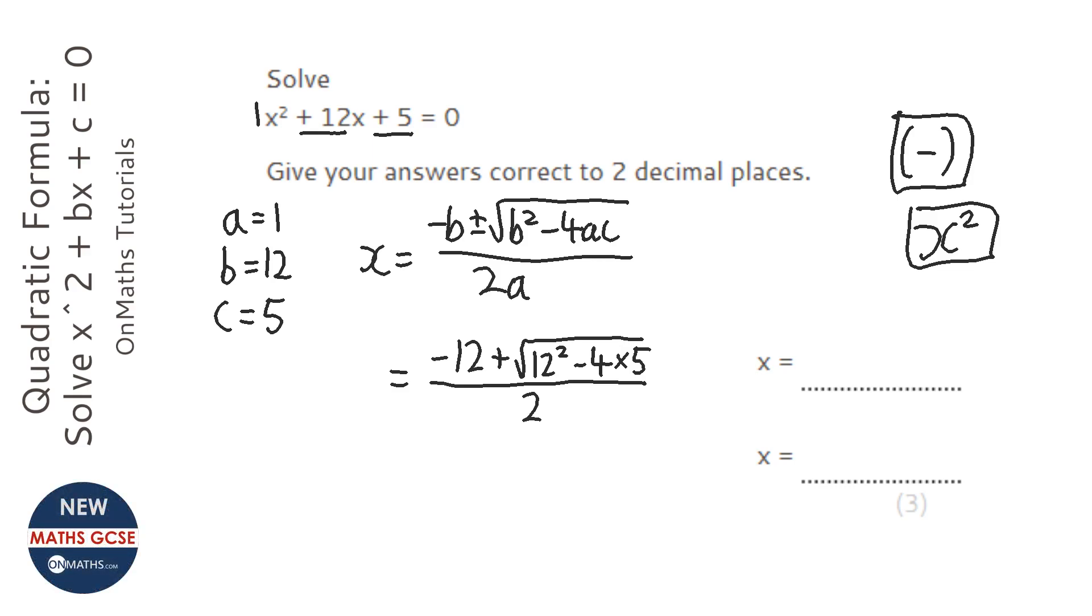Then when I press equals, it looks kind of funny, it's basically a third. So, I'm going to press the S to D button, which on my calculator looks like this, and that converts it to a decimal. So, it says minus 0.43.